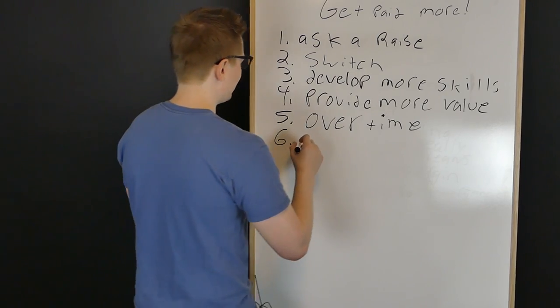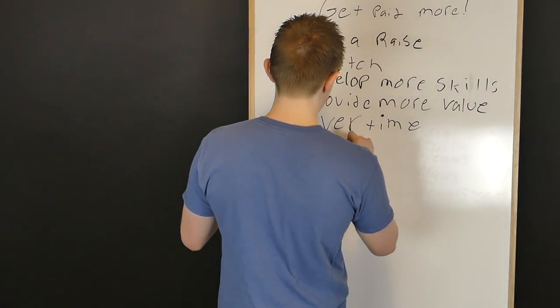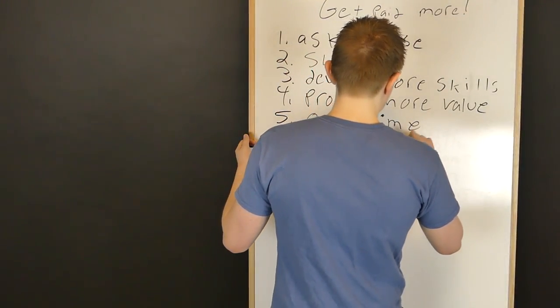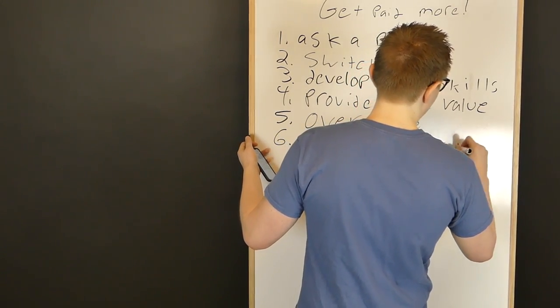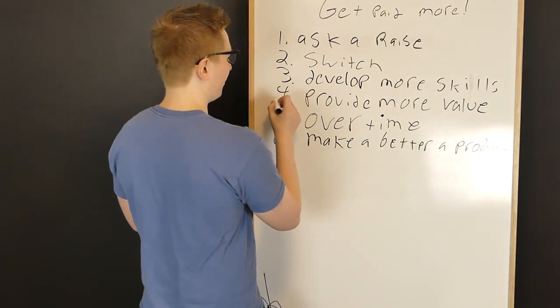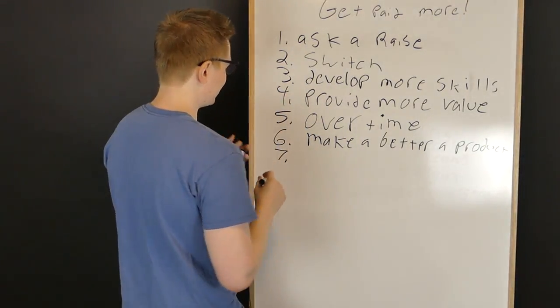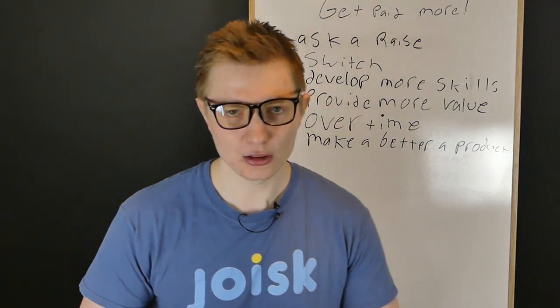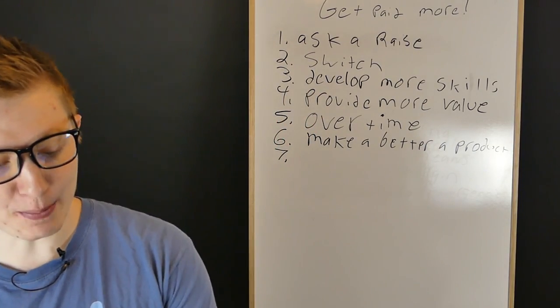So I actually, we might skip number six here cause I kind of overlapped it. We're going to skip number six here, but it was make a better product. So I guess I jumped into that during the provide more value one. There was a lot of overlap there. So we're just going to jump into number seven here.